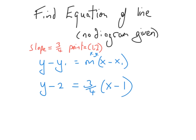So you can see we've plugged in 2 for y1, and 1 for x1, and then the slope 3 quarters in for m. Now to work this out, some people multiply the 3 quarters by what's in the brackets, but I prefer to take the 4 — which is dividing into 3 — and bring it over and multiply it by the expression on the other side.